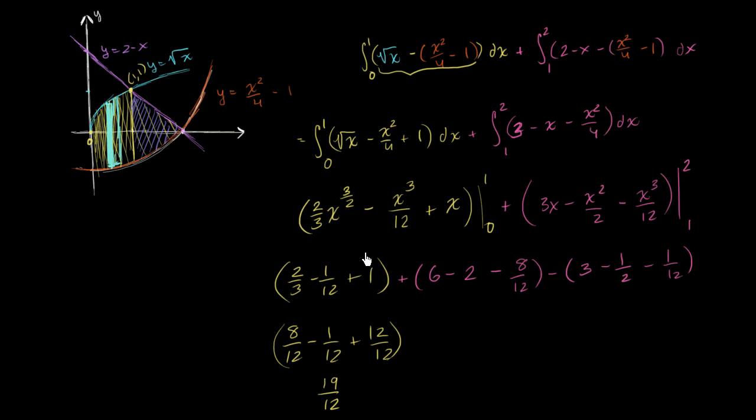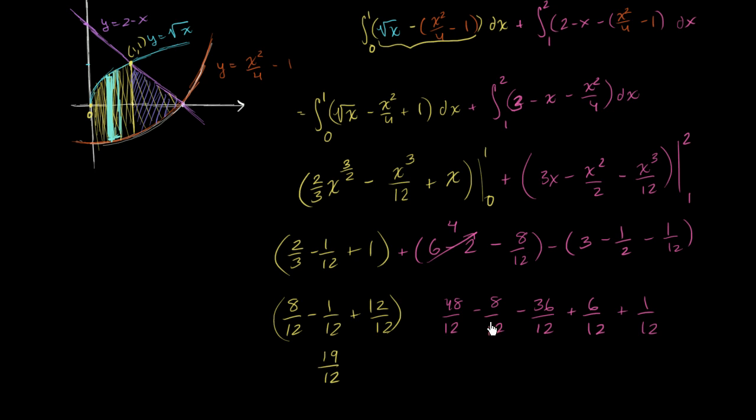And then this business, so 6 minus 2, this is just going to be 4. So we can write this as 48 over 12. That's 4. Minus 8 over 12. And then we're going to have to subtract a 3, which is 36 over 12. Then we're going to add 1 half, which is just plus 6 over 12. And then we're going to add 1 over 12. So this is all going to simplify to 48 minus 8 is 40. Minus 36 is 4. Plus 6 is 10. Plus 1 is 11. So this becomes plus 11 over 12.